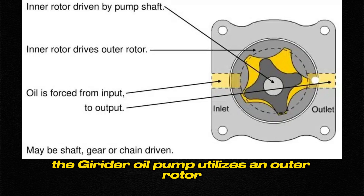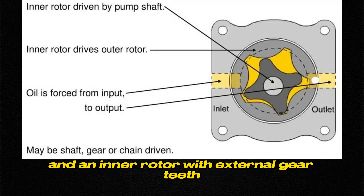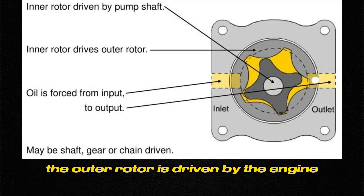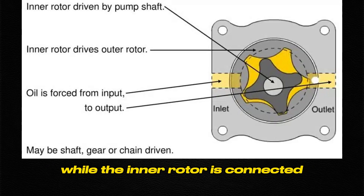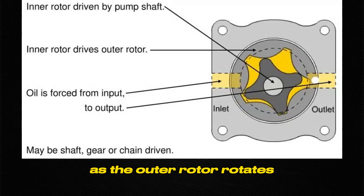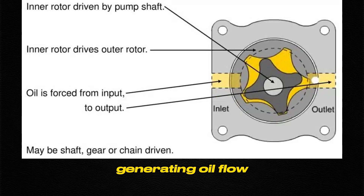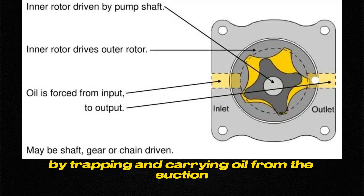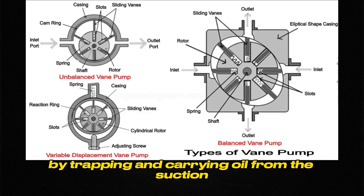The gerotor oil pump utilizes an outer rotor with internal gear teeth and an inner rotor with external gear teeth. The outer rotor is driven by the engine while the inner rotor is connected to the oil pump shaft. As the outer rotor rotates, it meshes with the inner rotor, generating oil flow by trapping and carrying oil from the suction side to the discharge side of the pump.